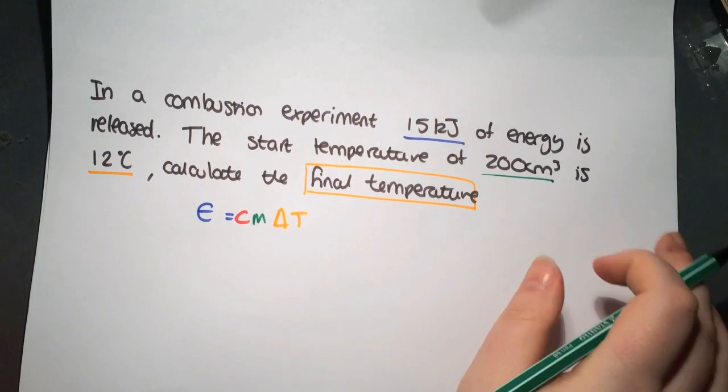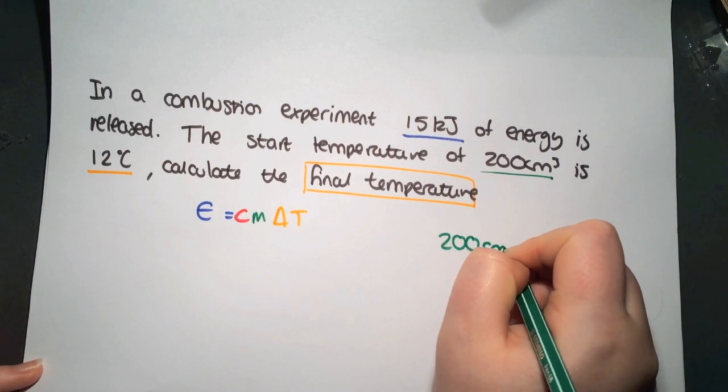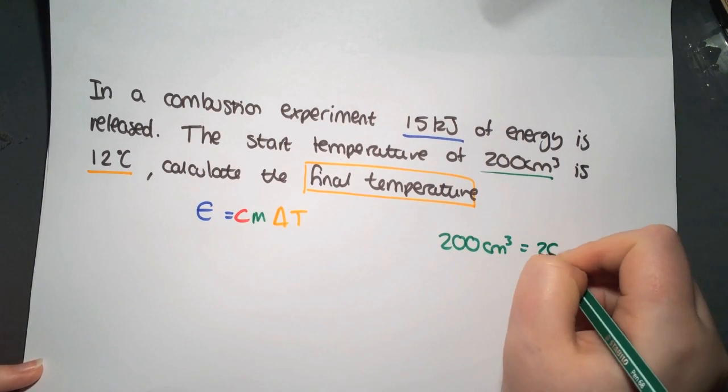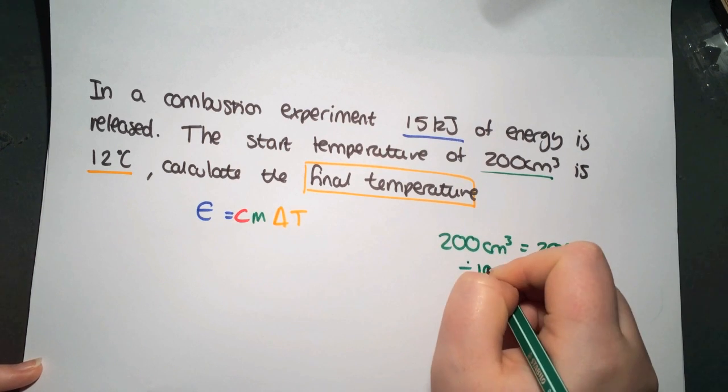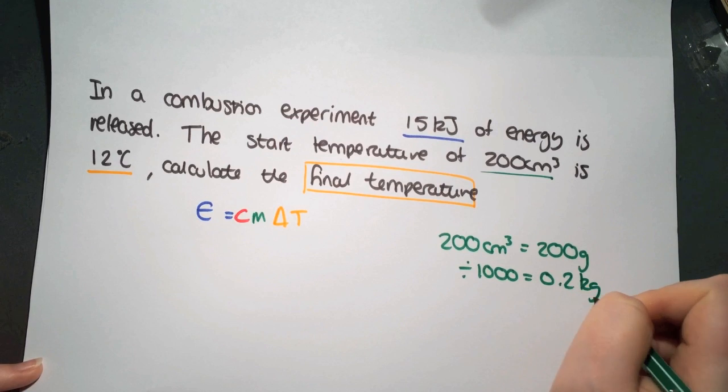We'll do our conversion for the water. So 200 centimeters cubed, it's the same as 200 grams. We're going to divide by 1,000 to give us 0.2 kilograms.